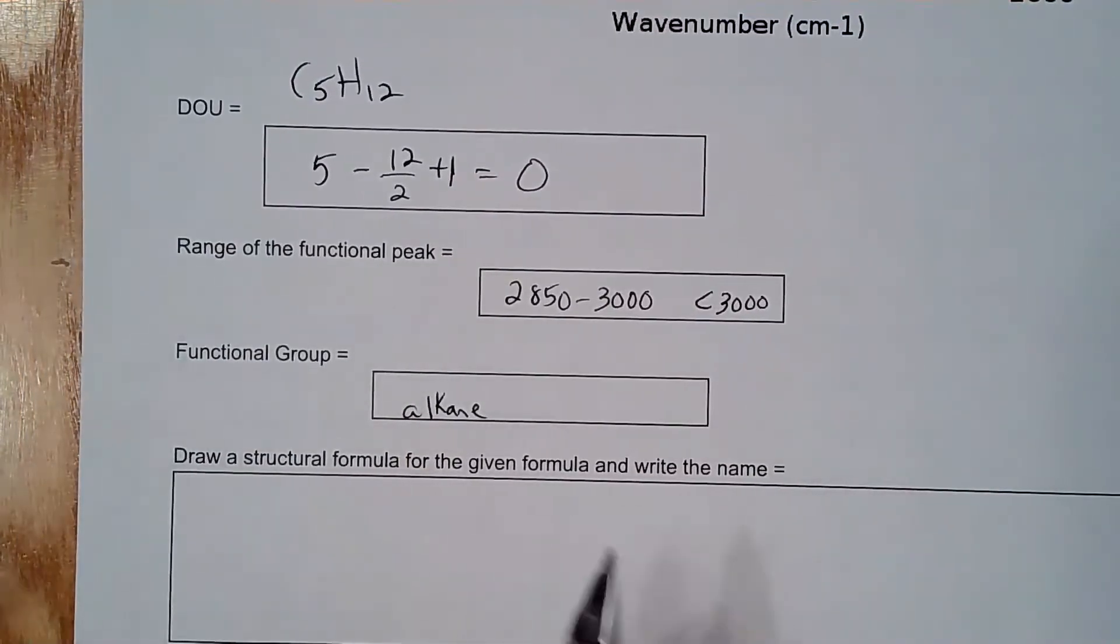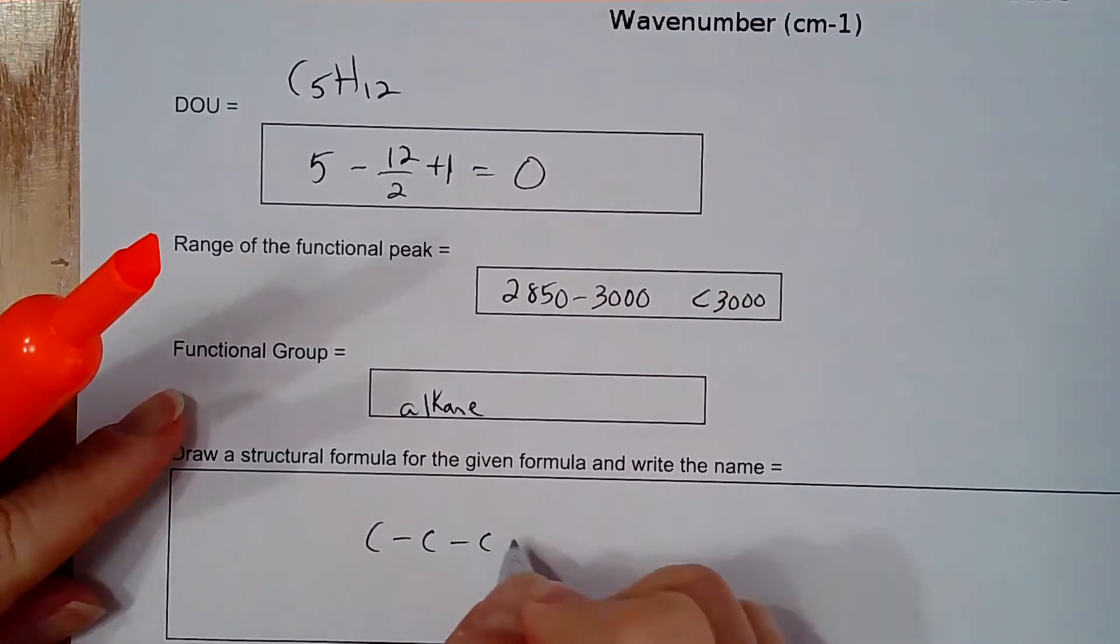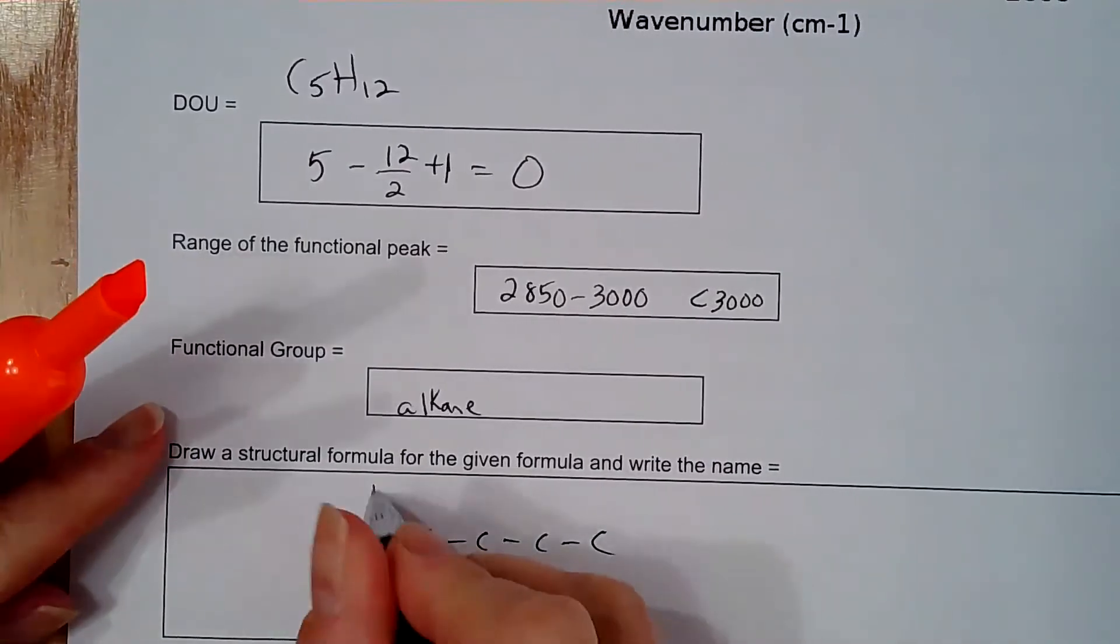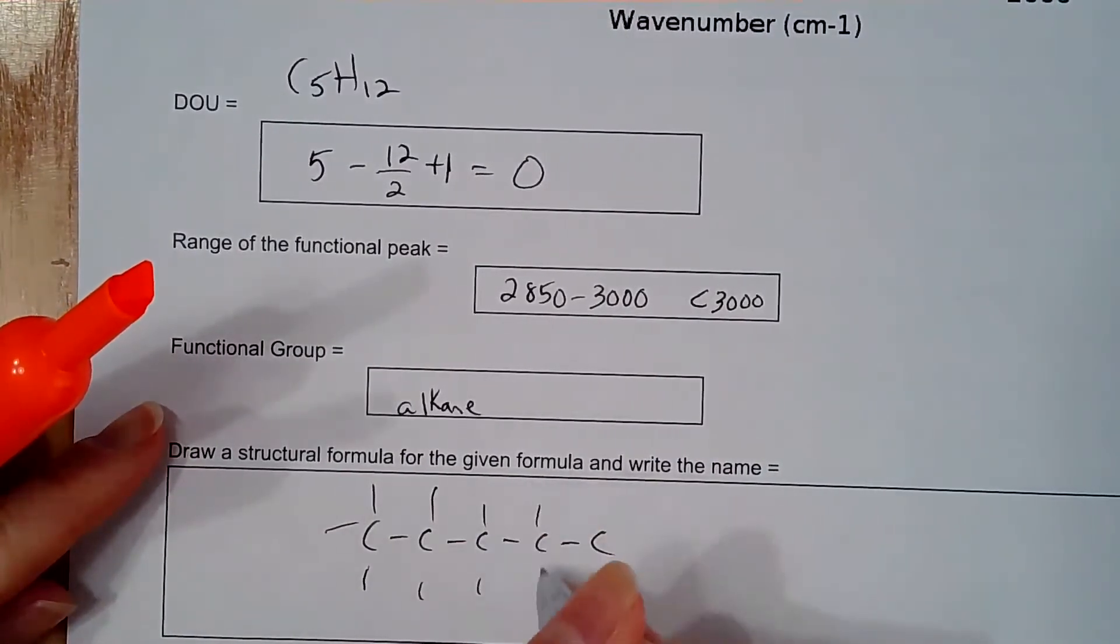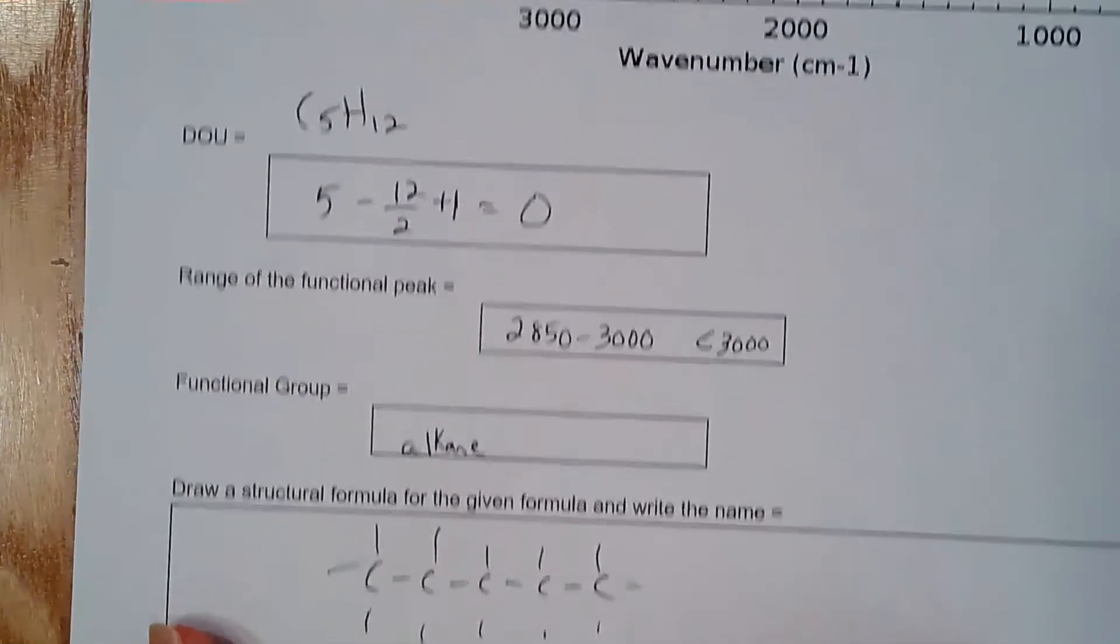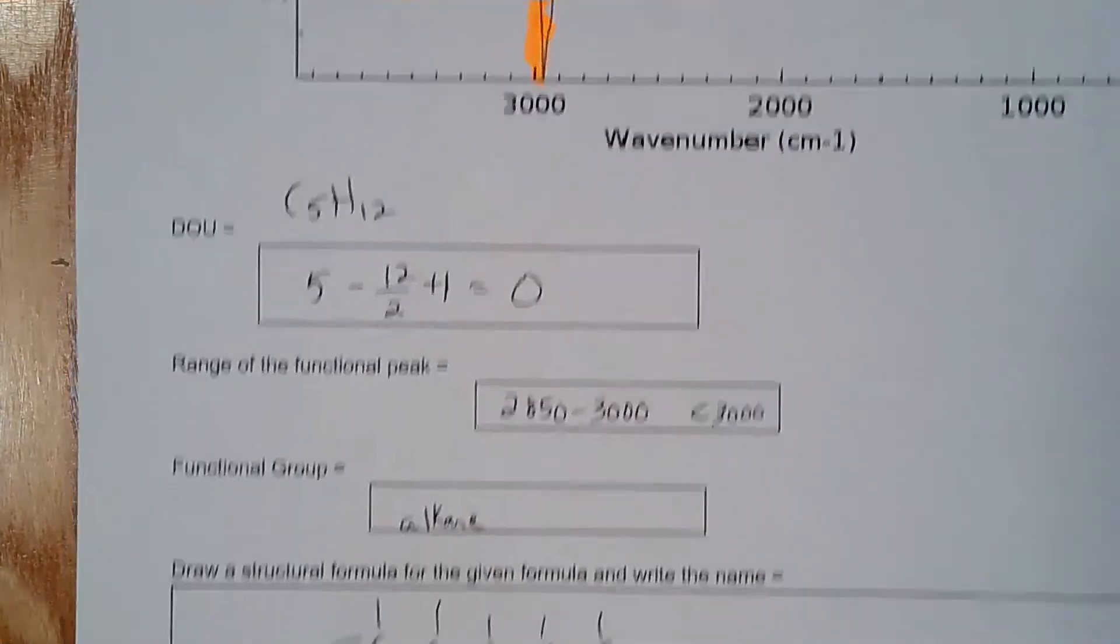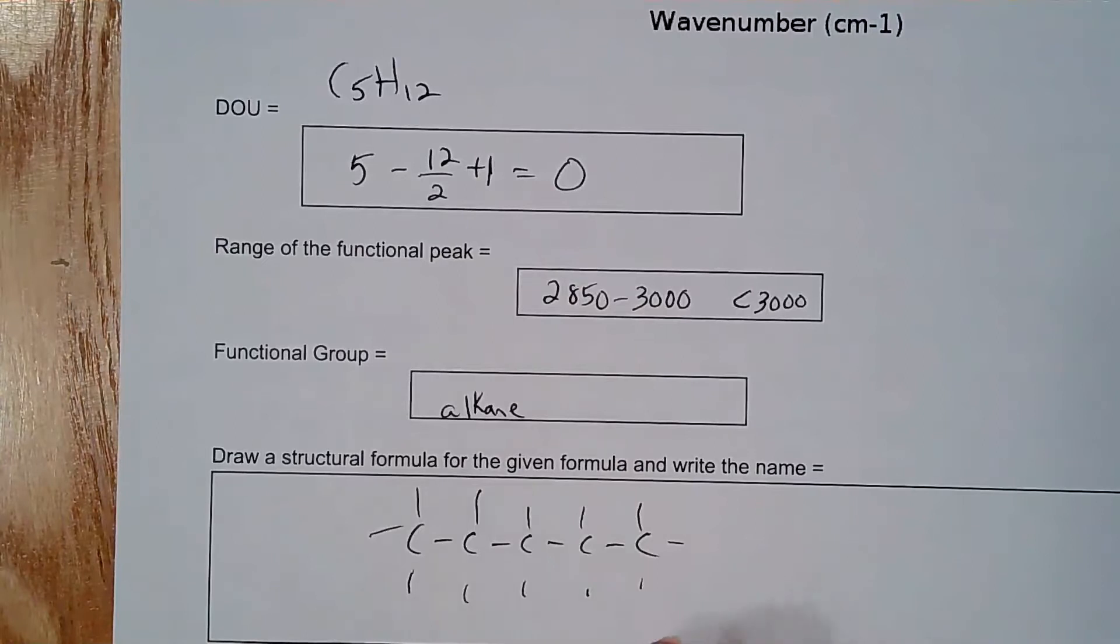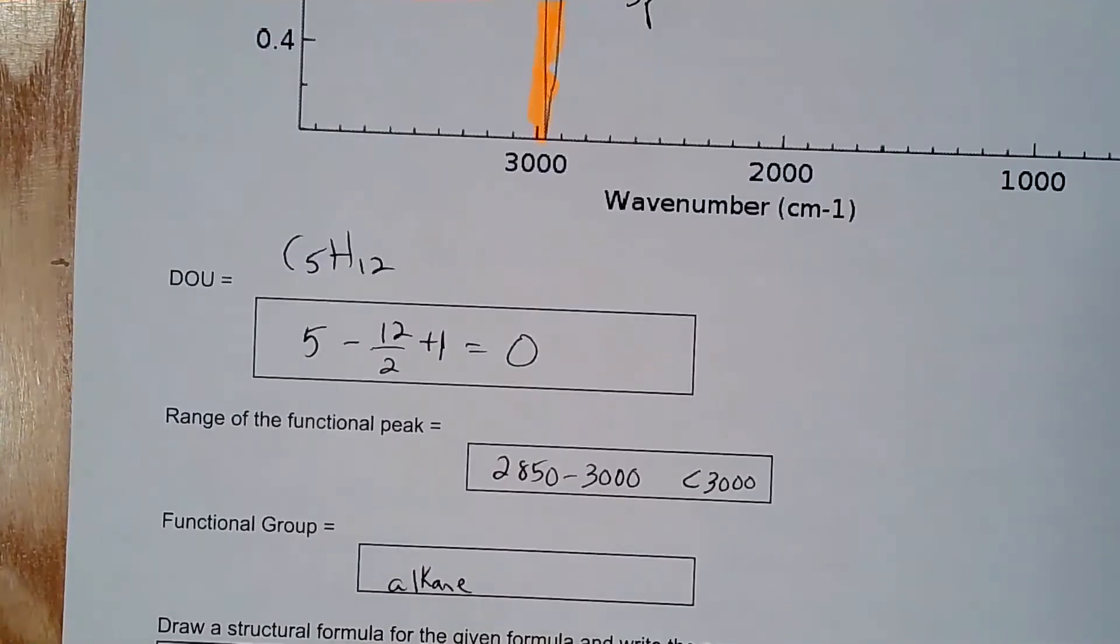So if it's a C5H12, all I want you to do is to draw five carbons, and they all are single bonded. I don't care if you name it because the good or bad of IR is it just gives you at least the functional group. It doesn't give you much of the structures. The name may not be correct in terms of how it is. So go through the next couple problems. I will come back on and go through the rest of the answer to you.